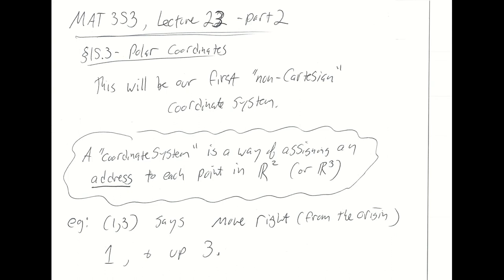Coordinate systems in general are ways of labeling the points in the plane, or in three space, or in four space, or whatever dimension Euclidean space you happen to be working in. They're analogous to the addresses that we have for our homes. If I tell you my apartment is at apartment 2 at 123 Fake Street, you can find that address and be exactly where I live. It's a way of pinpointing the location of things unambiguously. That's what coordinate systems amount to.